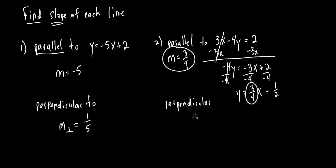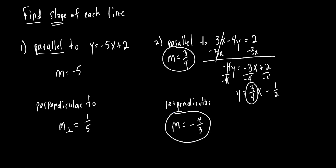What's the slope of a line perpendicular to this? Take the opposite sign and flip the fraction — so negative four-thirds. Once you get the hang of it, the negative reciprocal is almost as easy: look at the slope, take the opposite sign, flip the fraction, and you're done. On the quiz I'll ask for one or the other — parallel or perpendicular — not both. But finding both really isn't that hard.